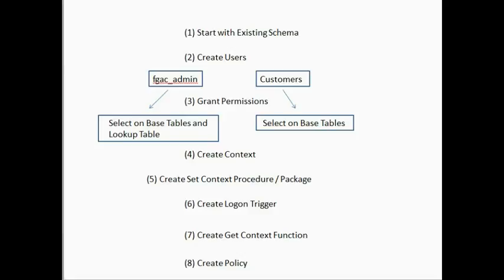For a virtual private database, at the table level, every table has to have a policy associated with it to add the extra where clause to filter out the data that's specific. In this example, we're going to have customer orders, and customers are going to be able to sign in but only see their own orders. They'll look at the customer orders table, but their logins will filter out only the data relevant to their customer number. So going backwards, the last step is to create a policy on each table that will filter out the relevant rows for that particular user.